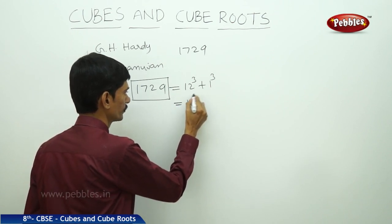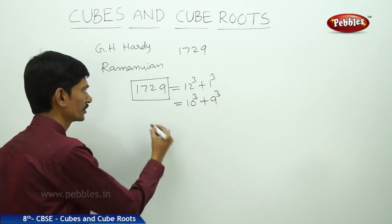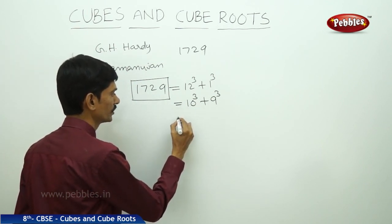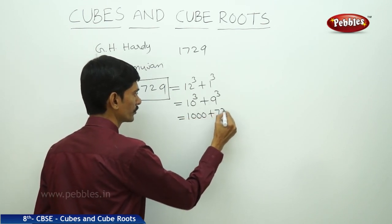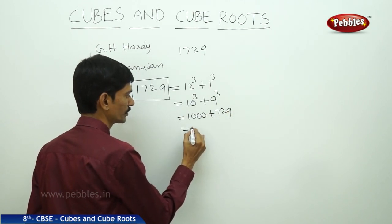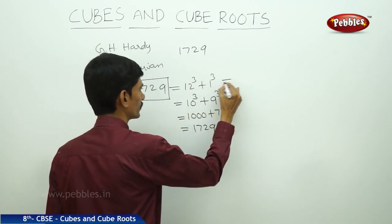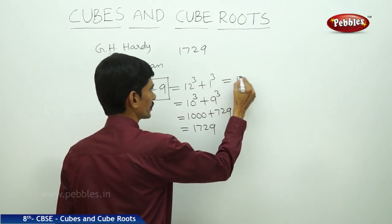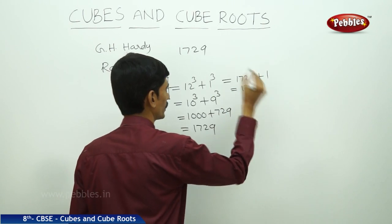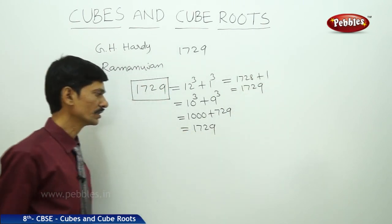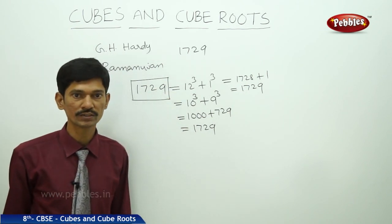1729 equals 12 cubed plus 1 cubed, and also equals 10 cubed plus 9 cubed. We can verify: 10 cubed is 1000, and 9 cubed is 729, giving 1729. Similarly, 12 cubed is 1728 plus 1 cubed is 1, also giving 1729. Since then, the taxi number 1729 is known as the Hardy-Ramanujan number.